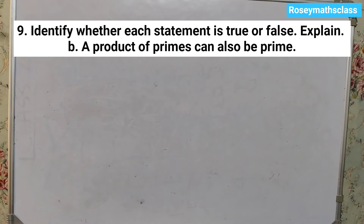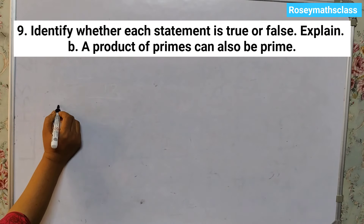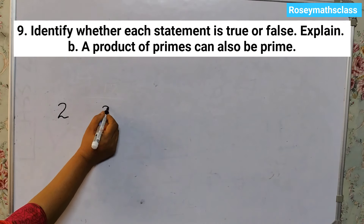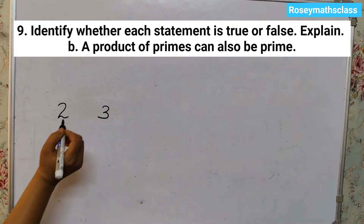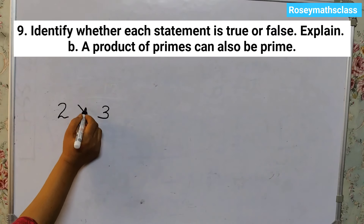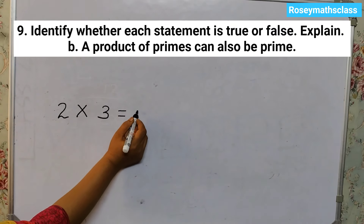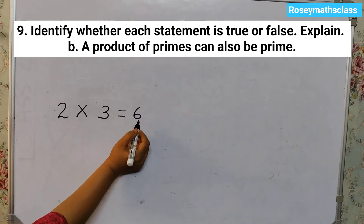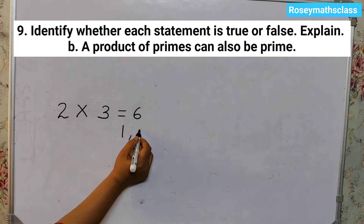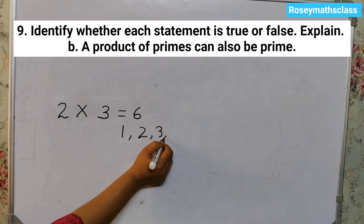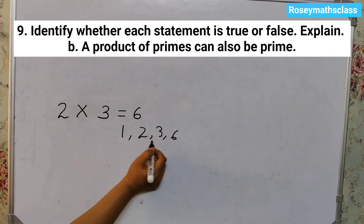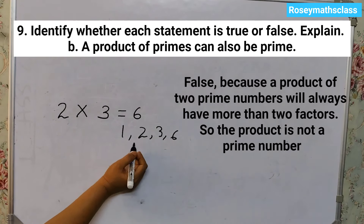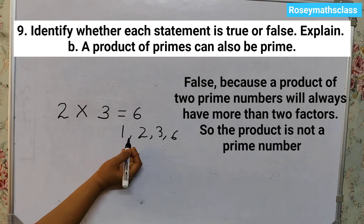Second one: a product of primes can also be prime. That is false. Because 2 is a prime number and 3 is also a prime number, so 2 into 3 is 6. The factors of 6 are 1, 2, 3, 6 — more than 2 factors. Therefore, this is not a prime number. So the answer is false.